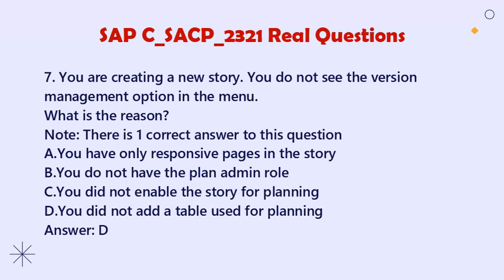Question 7: You are creating a new story. You do not see the version management option in the menu. What is the reason? Note: There is one correct answer. A. You have only responsive pages in the story. B. You do not have the plan admin role. C. You did not enable the story for planning. D. You did not add a table used for planning. Answer: D.